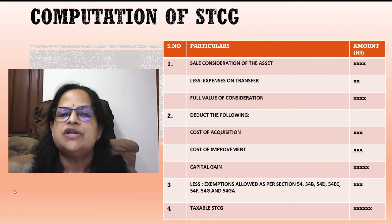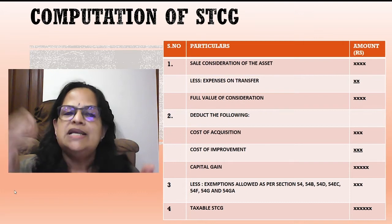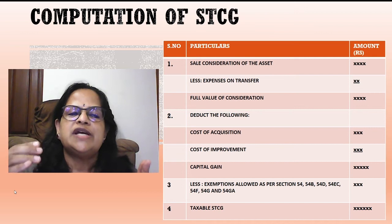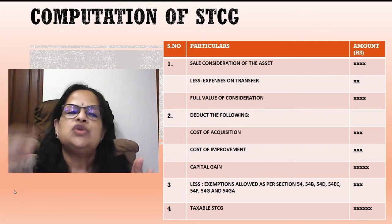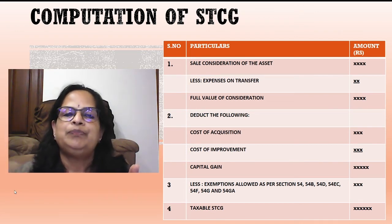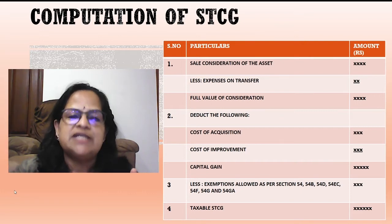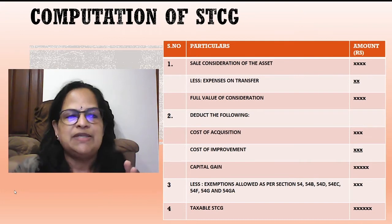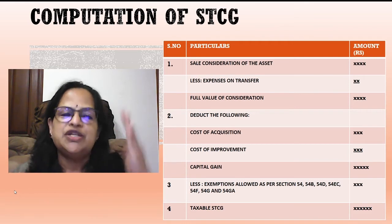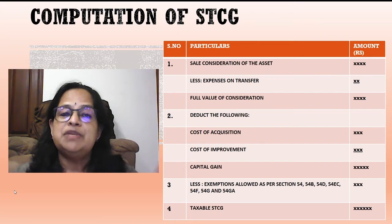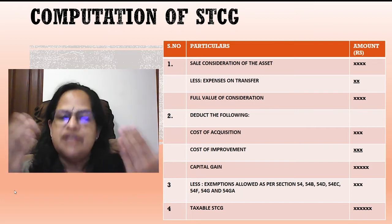For the computation of short-term capital gain: start with the sale consideration of the asset (the selling price), less expenses on transfer — this item is always included in the format whether present in the problem or not. This gives the full value of consideration. Then deduct cost of acquisition and cost of improvement to get the capital gain. Remember: in a question, it will not be stated whether it is short-term or long-term — you decide based on the period of holding. For depreciable assets, it is always short-term regardless of holding period.